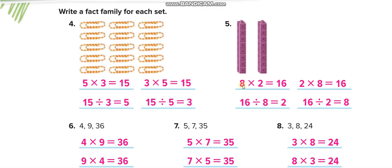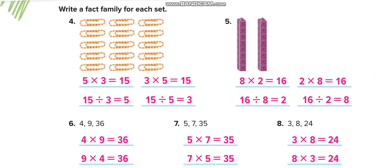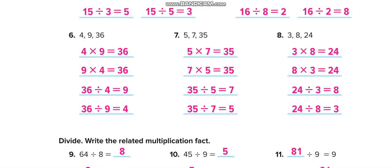Next, create fact families for these sets of numbers: 2 times 8 equals 16, 4 times 9 equals 36, 5 times 7 equals 35, and 3 times 8 equals 24. For each one, write all four related multiplication and division sentences.